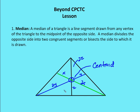In triangle ABC, the median from B to AC divides AC into two congruent segments. The median from C to AB divides AB into two congruent segments. And the median from A to BC divides BC into two congruent segments.